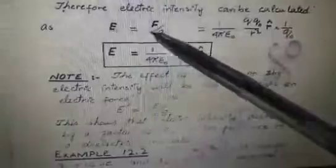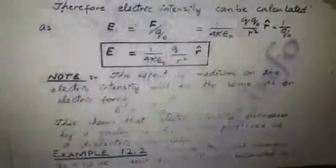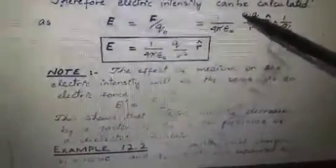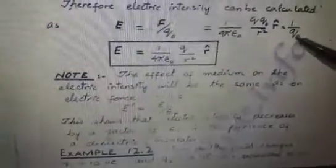If we have to calculate electric intensity, then E = F / Q₀. Substituting F = (1 / 4πε) × (Q × Q₀ / r²) × r̂ and multiplying by 1/Q₀, the Q₀ cancels out, giving E = (1 / 4πε) × (Q / r²) × r̂.